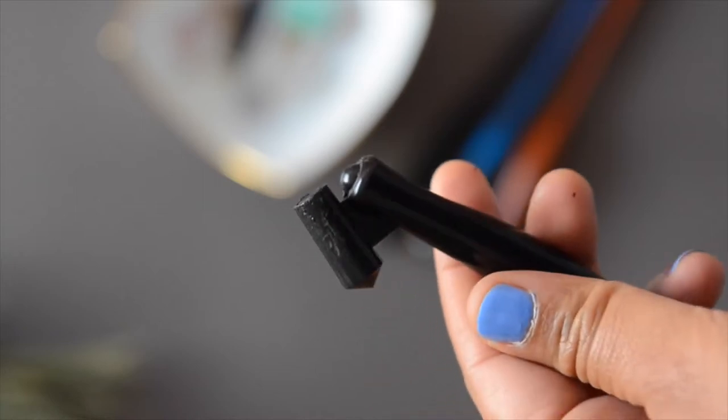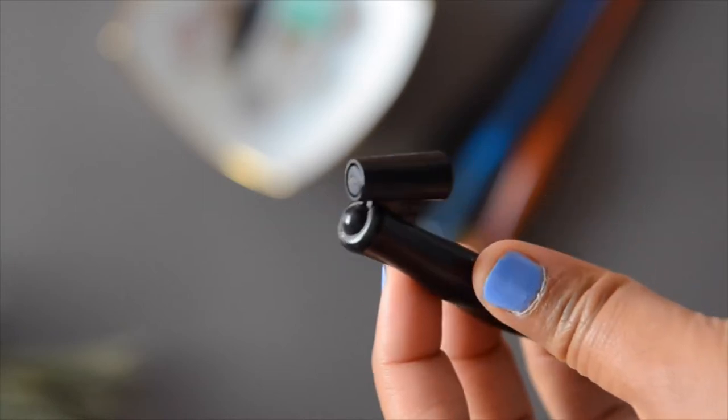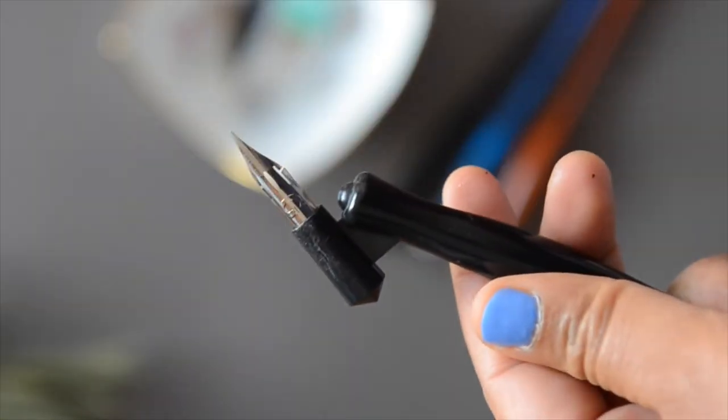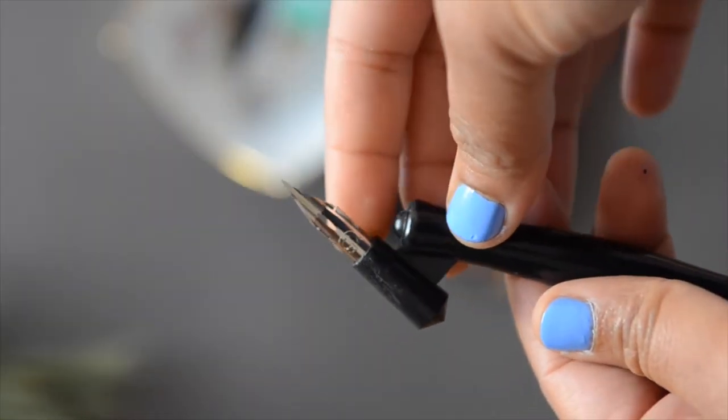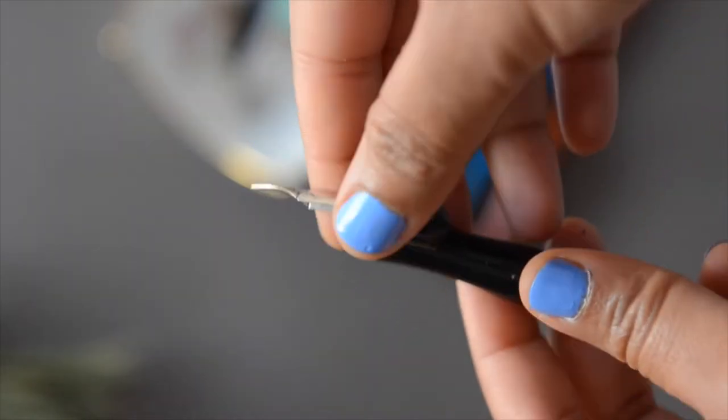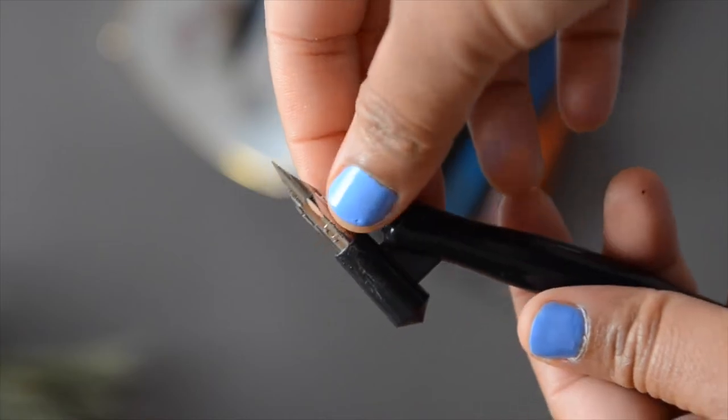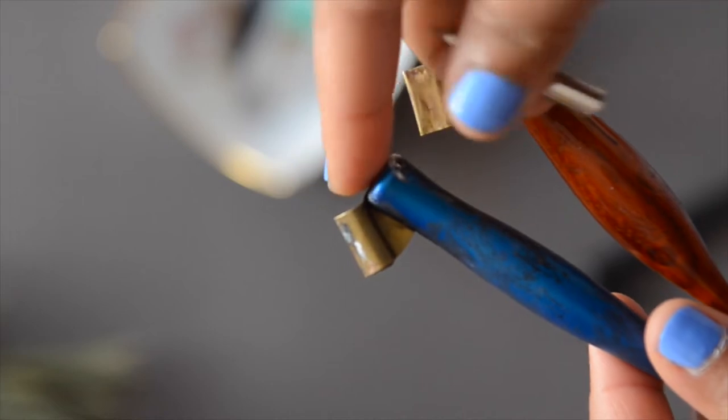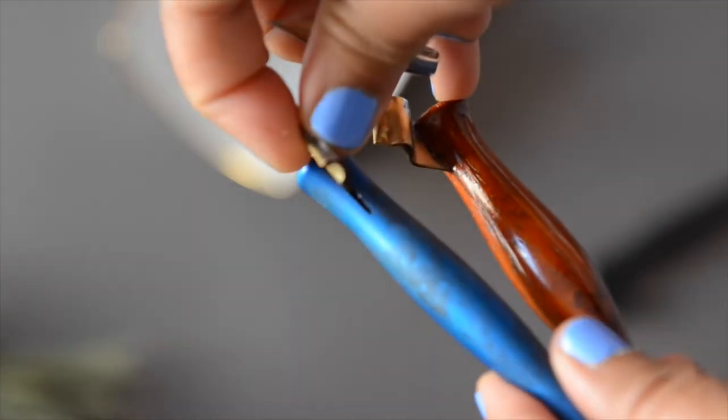This is the most commonly available oblique holder. It's the Speedball plastic oblique. But I really don't recommend it. It's not very adjustable. It's hard to fit larger nibs in there and some nibs just won't fit at all. So instead of getting this, I recommend that you spend a little bit more and get a holder with an adjustable metal flange. You can adjust that to fit any nib with pliers.